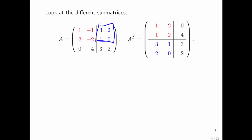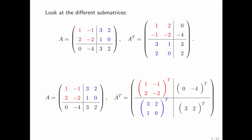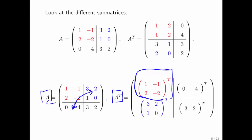Let's look at this submatrix of A. We notice that it is moved to this position in A transpose, and the elements themselves are transposed. In order to take A to A transpose, we transpose the submatrix of A — that's what you would do if these were just scalars, except that each of the submatrices themselves also has to be transposed.